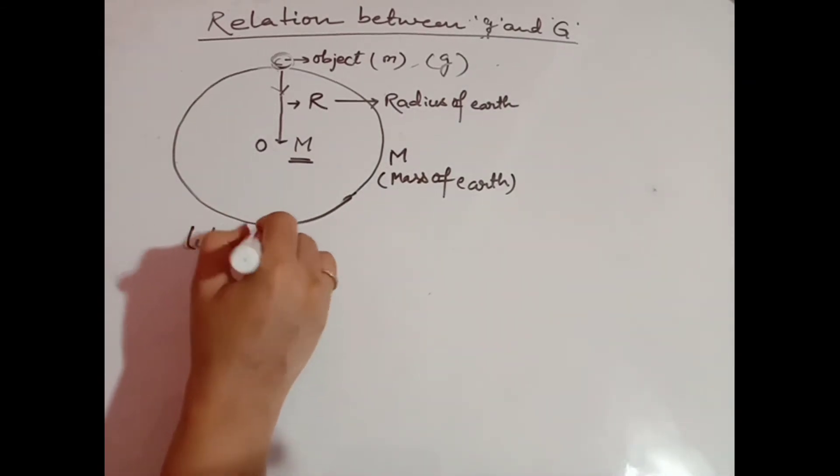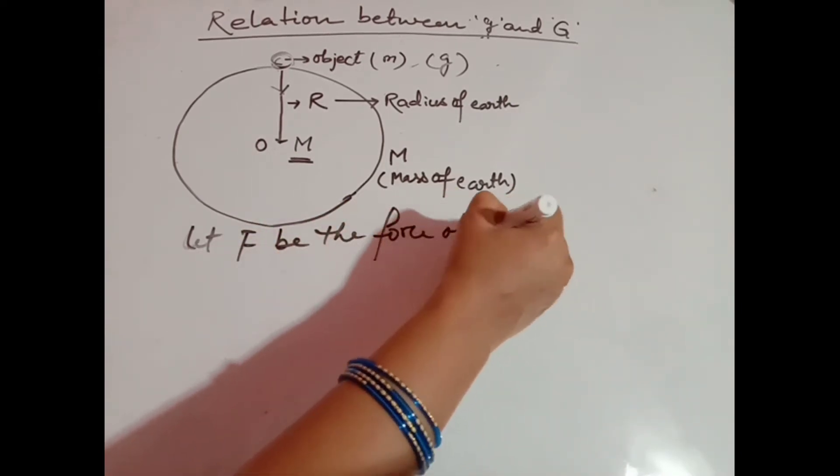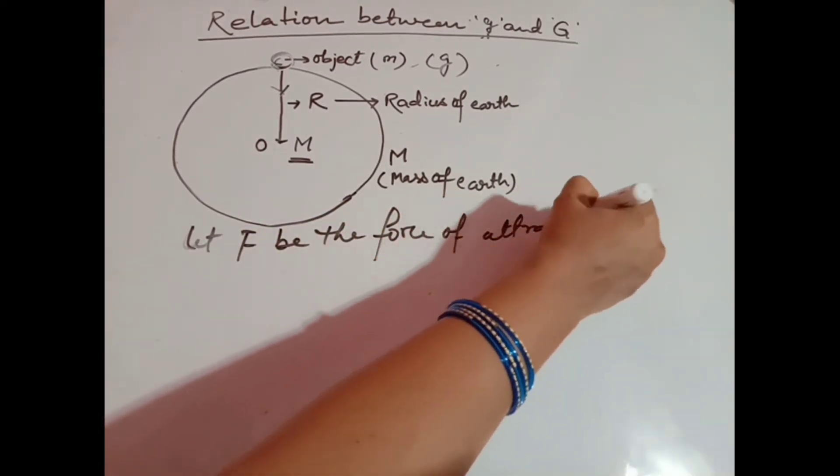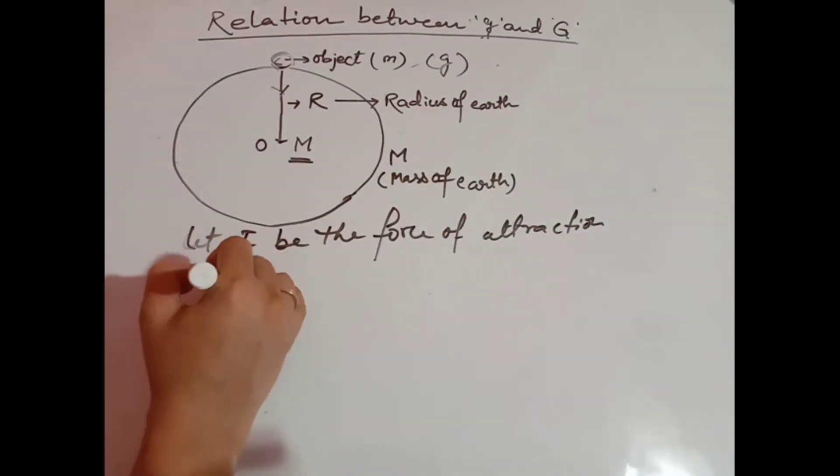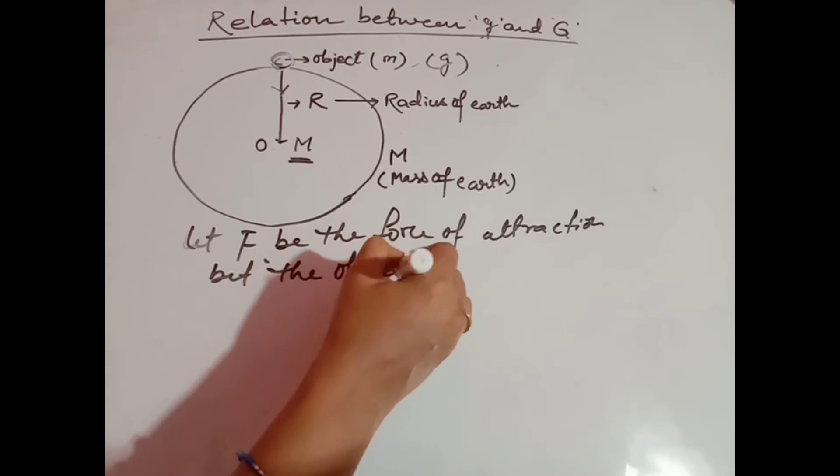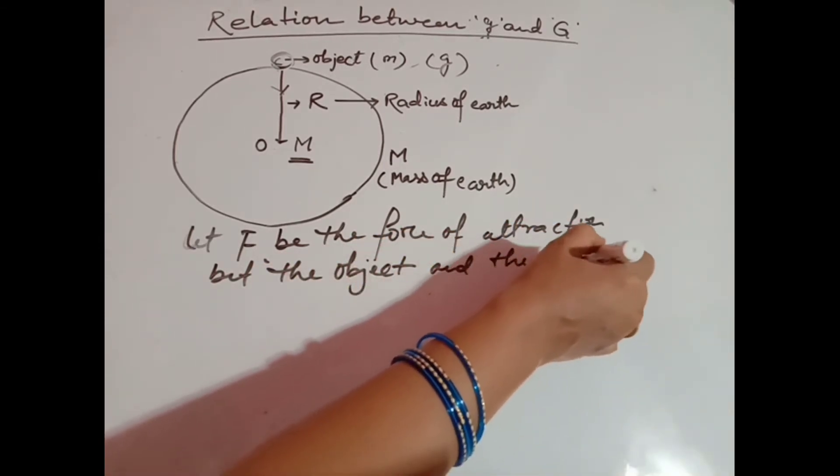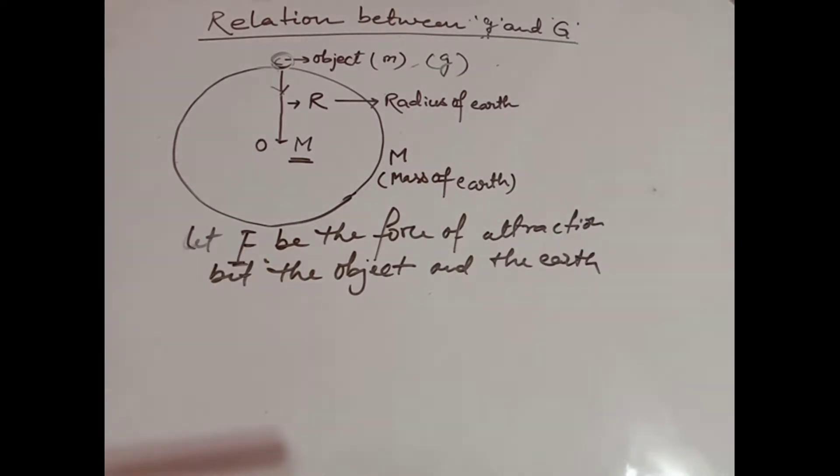Now we start the derivation. Between these two objects, a force, let us write that, a force F is the force of attraction, the force of attraction between the object and the Earth.